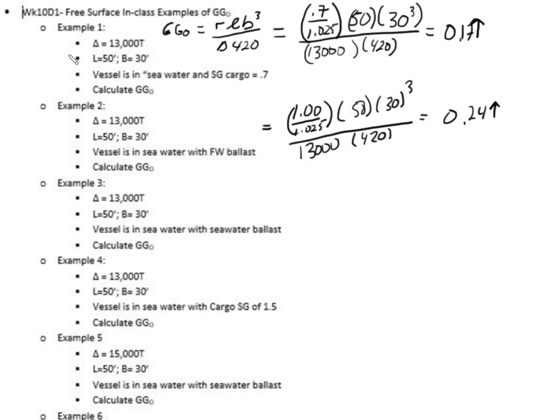Let's do this problem now. We're in seawater with seawater ballast. Well, that's 1.025 divided by 1.025, which becomes 1 times 50 times 30 cubed over 13,000 times 420. And when we do that, we should get a GGO 0.25 feet up. And these are all feet, by the way.